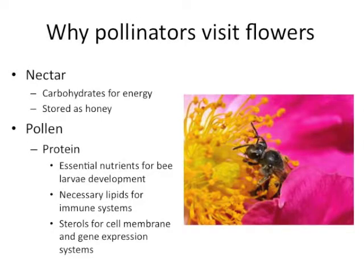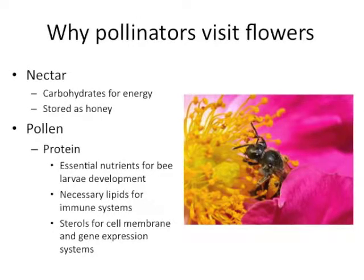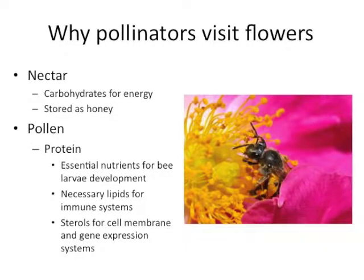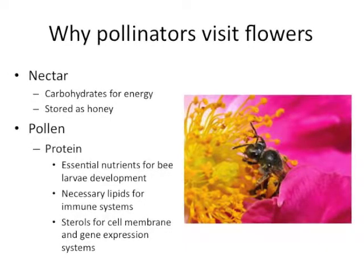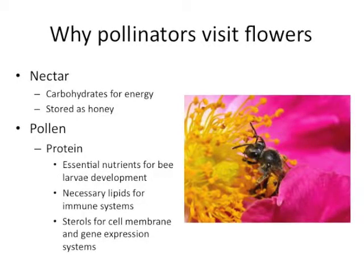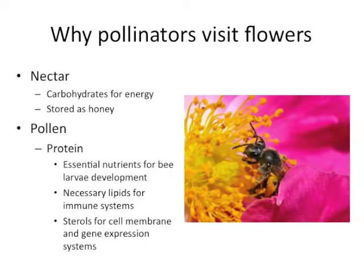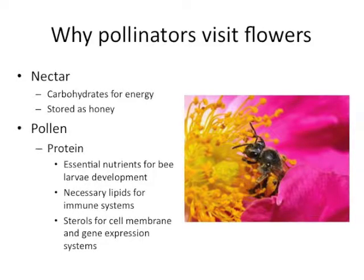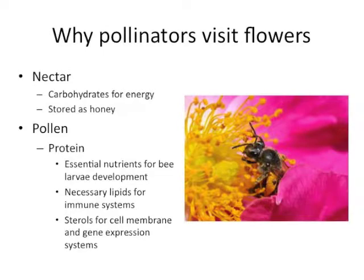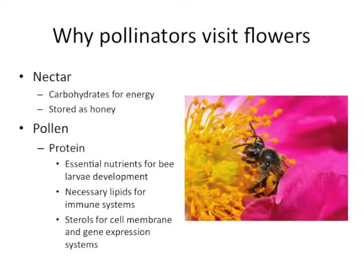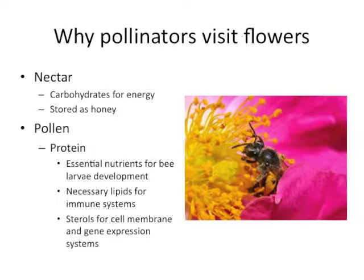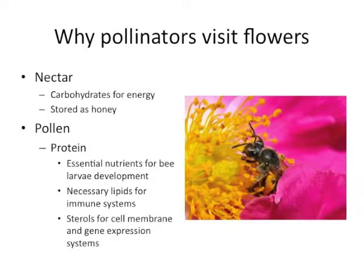Bees collect pollen for a variety of reasons. The primary use of pollen is as a source of protein, which is an essential nutrient for bee larvae development. Without it, bees could not rear their young. They also collect protein in the pollen for necessary lipids for immune systems, and the protein provides sterols for cell membrane development and gene expression systems.